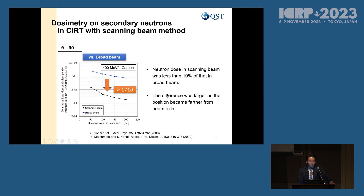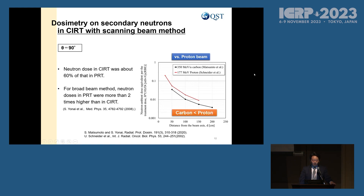This figure shows the comparison of neutron dose between proton beam and carbon beam. Neutron dose in CIRT was about 60% of that in proton radiotherapy. In our previous study for the broad beam method, neutron doses in proton radiotherapy were more than two times higher than in CIRT, so these results are consistent. There is also an important difference in angular dependency of neutron dose between CIRT and proton radiotherapy — the proton beam dose does not depend on emission angle, but the carbon beam has angular dependency.